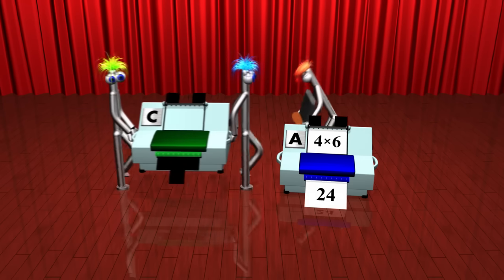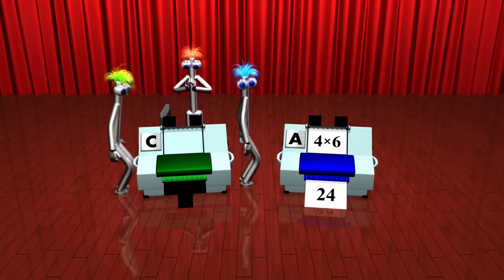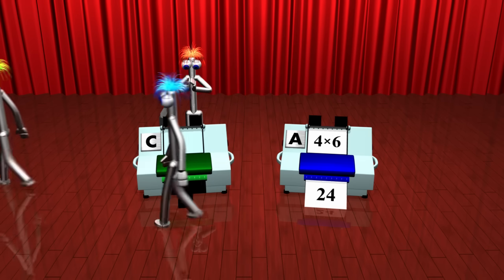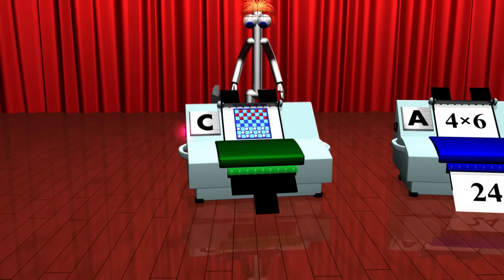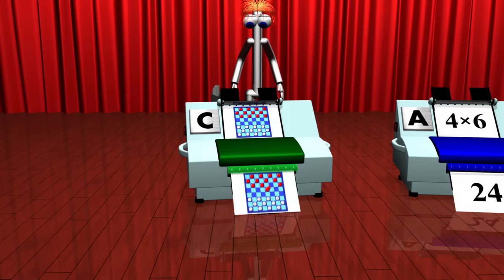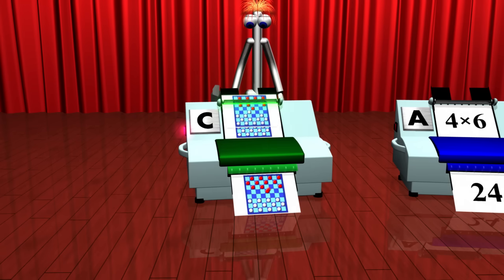Here's another computing machine, C. C plays checkers. It receives the current state of the board, and it prints how it would move one of the red pieces. C plays checkers so well, it will never lose a game.